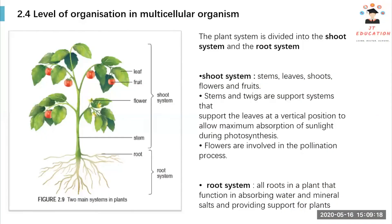For the plant system, it can be divided into two: the shoot system and the root system. The shoot system includes the stem, leaves, shoots, flowers, and fruits. The stem and twigs are the support system that hold leaves in a vertical position and allow maximum exposure to sunlight during photosynthesis. Flowers are for pollination, and the root system functions for absorbing water and mineral salts and providing support to the plant.